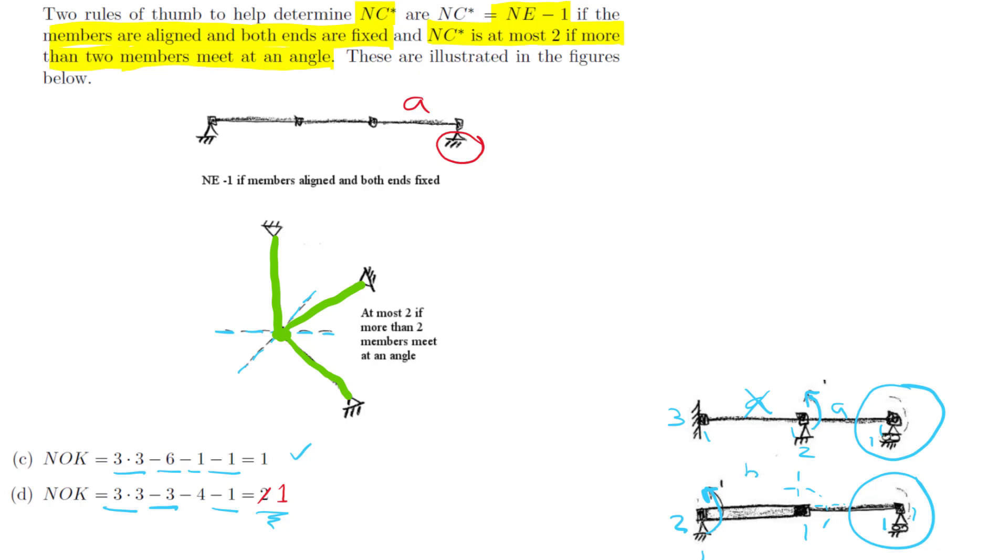For our constraints, we have a rigid body constraint on this member, which counts as three constraints, and an axial constraint on this member, which counts as one more. This gives us a total of four constraints. In other words, I get an NOK of one, which matches the figure.